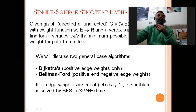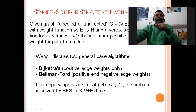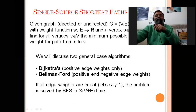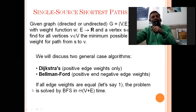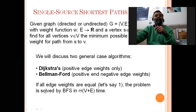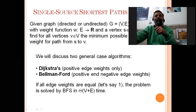There are two general algorithms for single-source shortest path: the first is Dijkstra's algorithm and the second is the Bellman-Ford algorithm. Bellman-Ford is not in our scope. The difference is that Dijkstra's algorithm works for positive edge weights, while Bellman-Ford works for both positive and negative edge weights. If all edge weights are equal — say, one — then the problem is solved by the BFS algorithm in O(V + E) time.